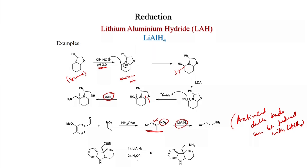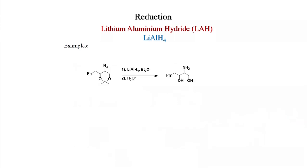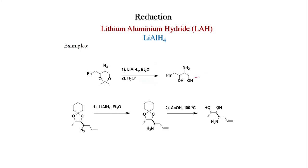Further examples: a nitrile treated with LiAlH4 followed by acidic workup gives the amine. A secondary azide with LiAlH4 gives a secondary amine. In another example, an azide gives a primary amine, and after acid workup the ketal is cleaved to give the free diol.